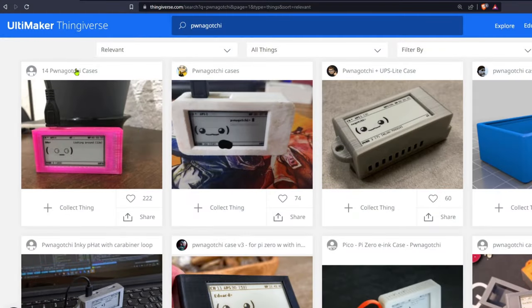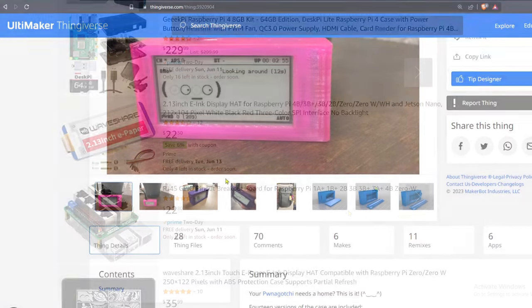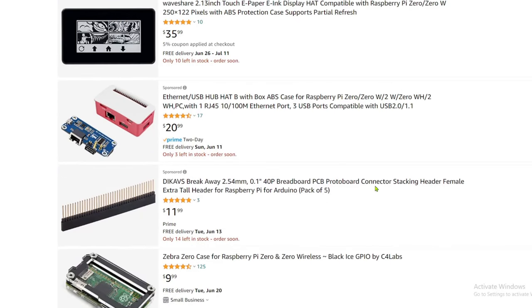Pwnagotchi 3D printable case files are available on Thingiverse. Links in the description. Alternately, you can buy workable cases on Amazon.